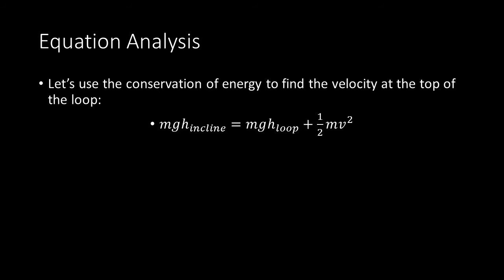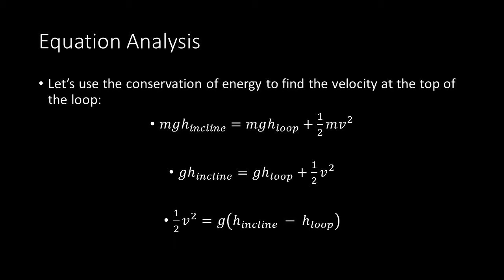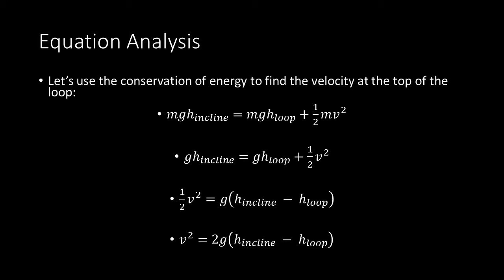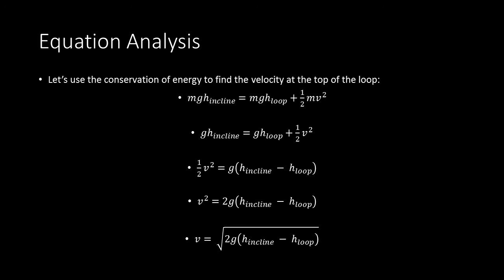Now let's solve for the theoretical velocity of the marble at the top of the loop. We state that mg times h of the incline equals mg times h of the loop plus 1/2 mv². Dividing both sides by m gives g·h_incline = g·h_loop + 1/2 v². Subtracting g·h_loop from both sides and rearranging: 1/2 v² = g(h_incline − h_loop). Multiplying both sides by 2 and taking the square root gives v = sqrt(2g(h_incline − h_loop)).